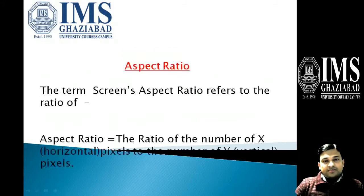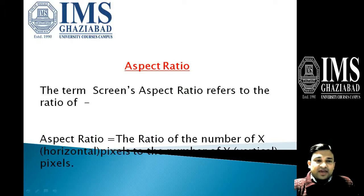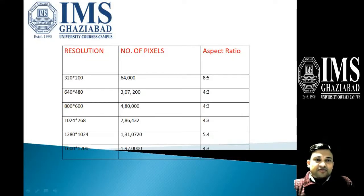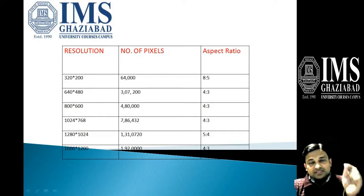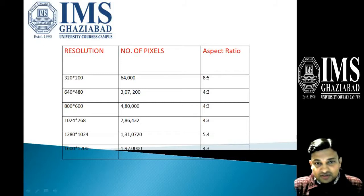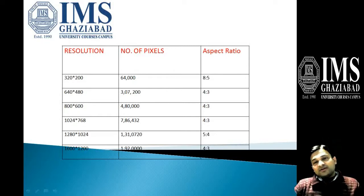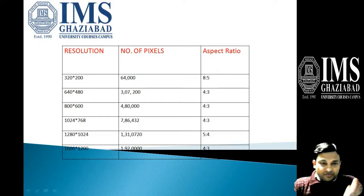Aspect ratio is another important terminology associated with computer graphics. The screen's aspect ratio refers to the ratio of the number of horizontal X pixels to the number of vertical Y pixels. For example, if we have a resolution of 320 by 200, that means 320 pixels in the X direction and 200 in the Y direction. The total resolution is 64,000 pixels, and the aspect ratio is 8:5, obtained by dividing 320 by 200.